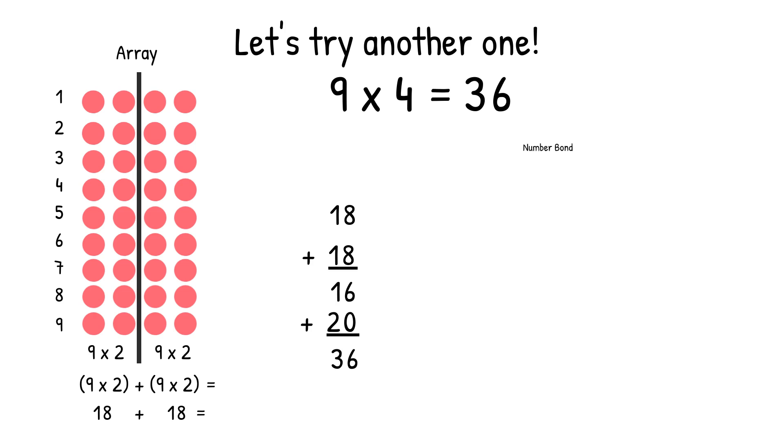Next, we're going to solve it using the number bond strategy. Let's rewrite the expression 9 times 4. We're going to break apart the 4 into 2 and 2, and then we're going to rewrite our equation: 9 times 2, in parentheses, plus 9 times 2, in parentheses, equals. Then we're going to find our products first. So 9 times 2 equals 18, and 9 times 2 equals 18. Then we're going to add those two products together. 18 plus 18 equals 36. So again, we get the same answer using two different strategies.